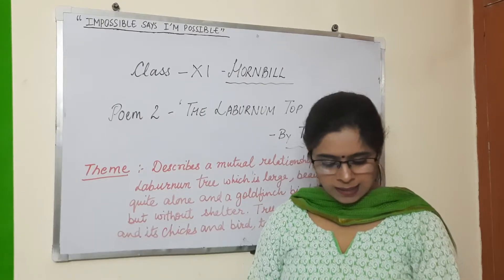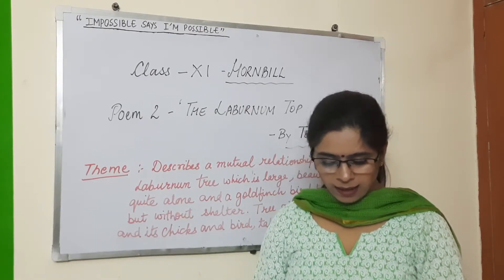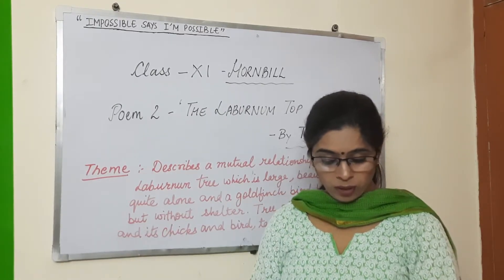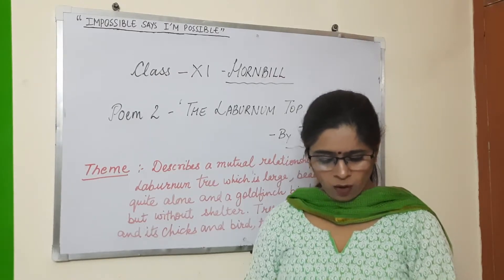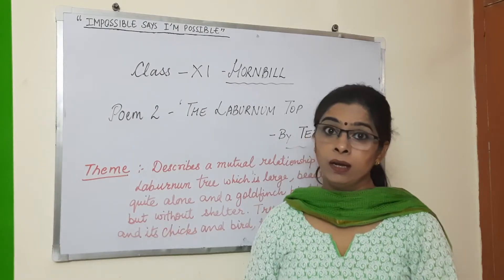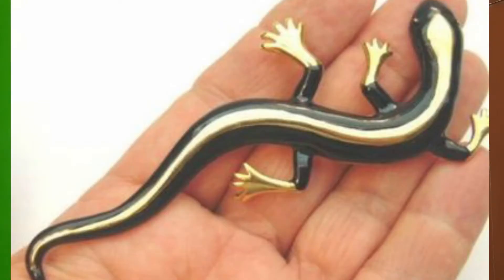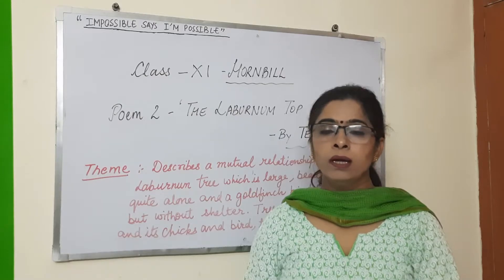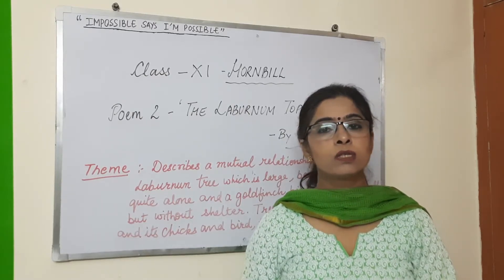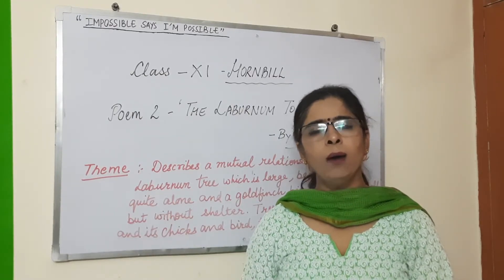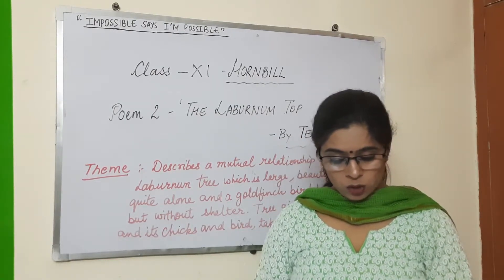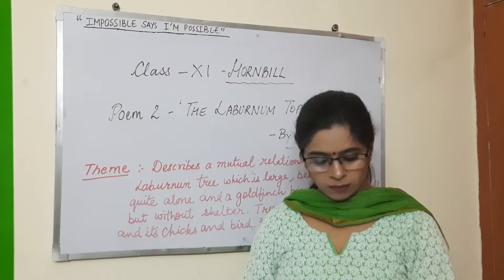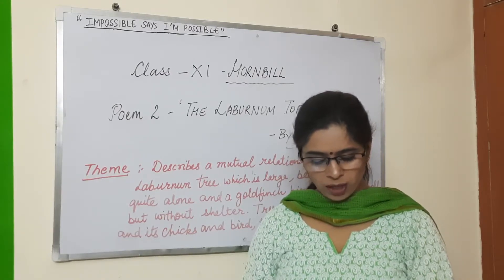Then sleek as a lizard, and alert and abrupt. 'Sleek' means smooth and shining. Why is it shining? Because it is sunlight time, September, afternoon — it shines a lot. The tree is shining because the yellow leaves are sharp and shining. In the same way, the goldfinch bird is also shining.